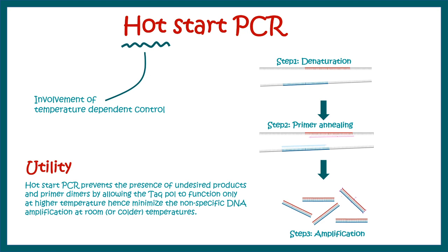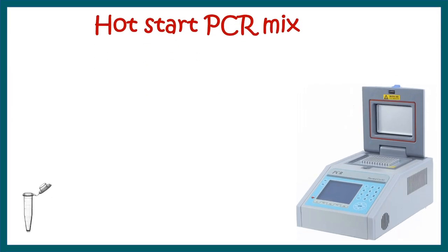the TAC polymerase can only function at higher temperature or start showing its function at higher temperature and this minimizes non-specific amplification at lower temperature. In this video, we would understand the overall concept behind that. Stay tuned till the end.